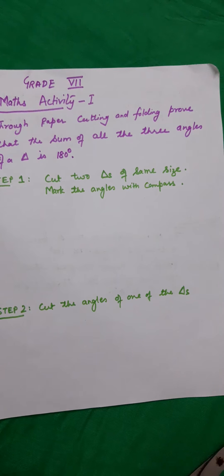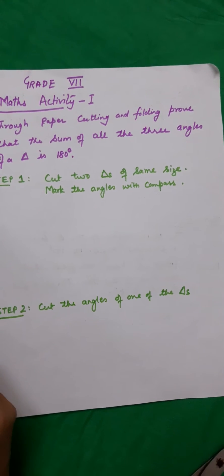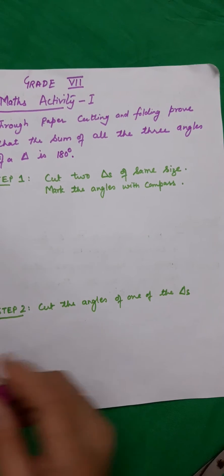Materials required are origami sheets, colored paper, or any kind of paper. You can even cut colored paper from newspapers. First step is to cut two triangles of the same size and mark the angles with a compass.